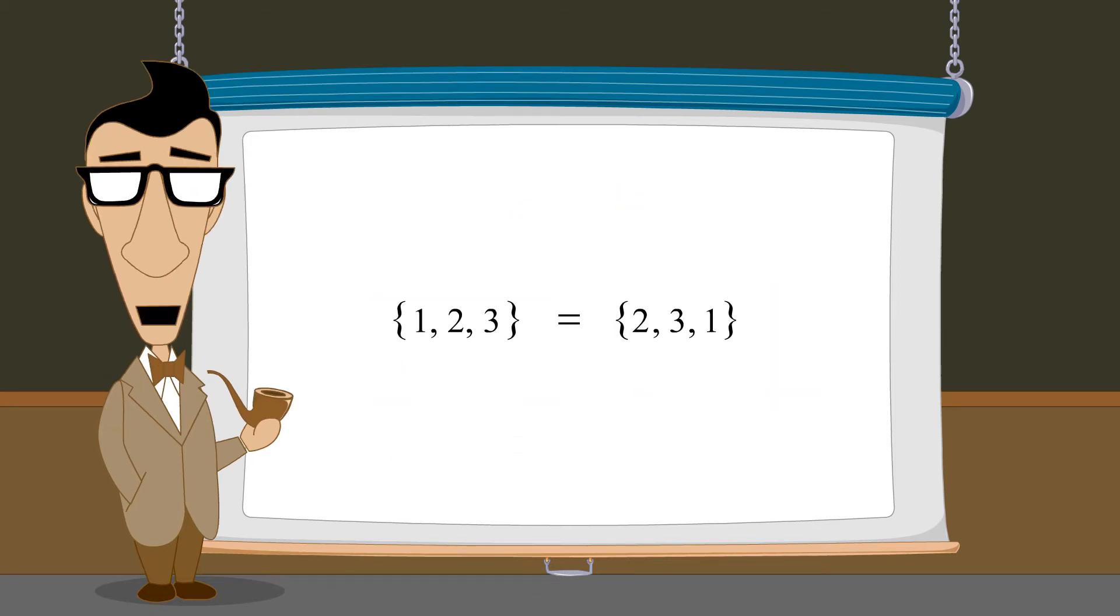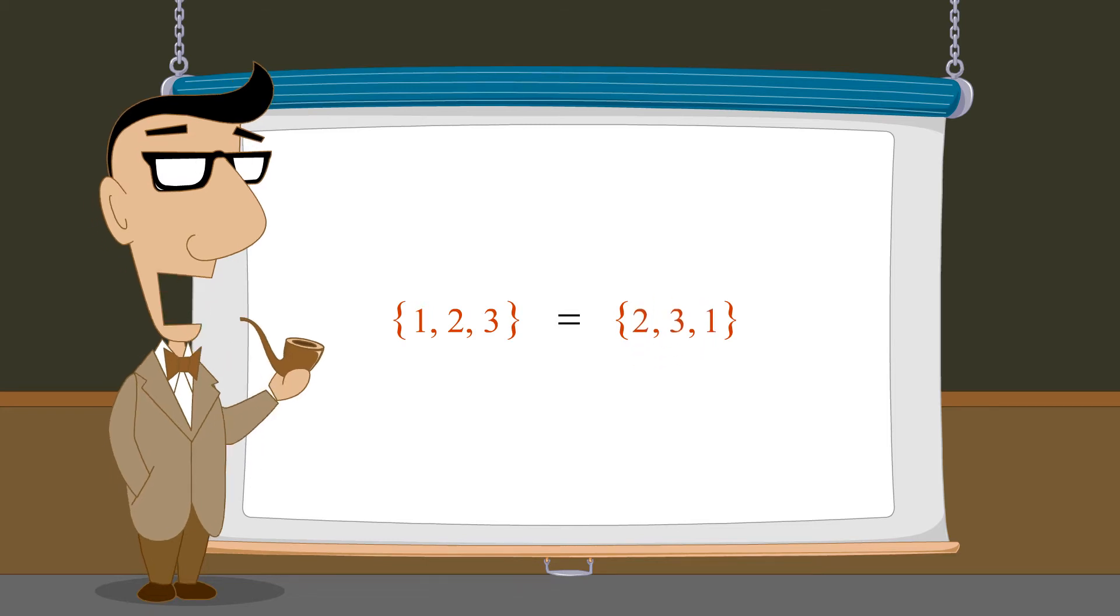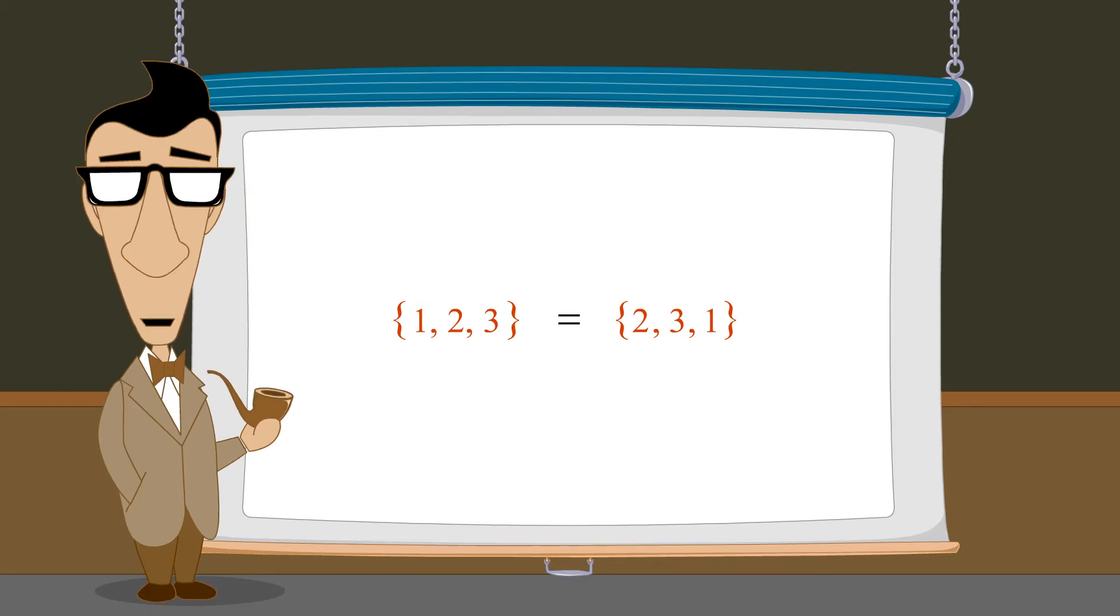Notice that it doesn't matter that their elements are listed in different orders. This is because the order in which the elements of a set are listed is irrelevant. The set consisting of 1, 2, and 3 is exactly the same as the set consisting of 2, 3, and 1. The list does not imply that there is any particular order to the elements. It only says that every element listed is a member of the set.